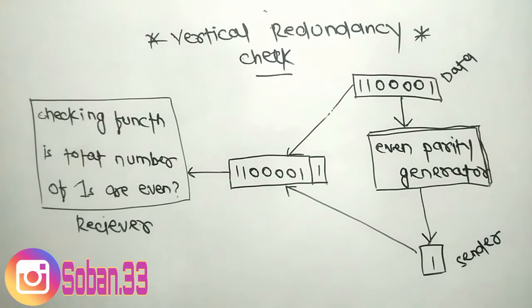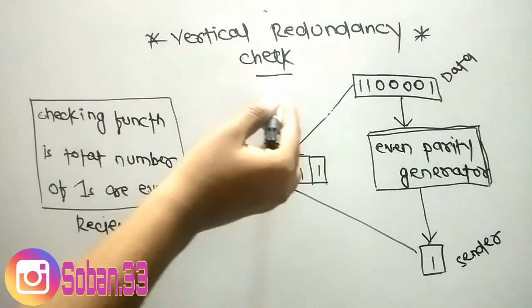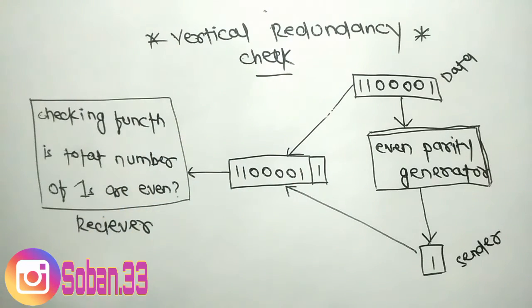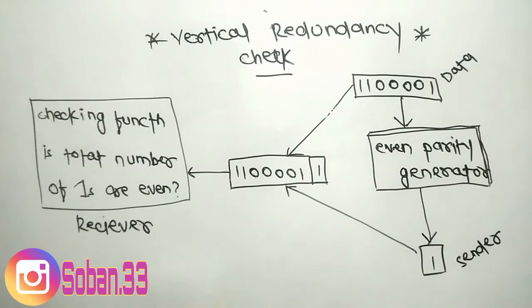The topic we are going to study in this video is vertical redundancy check. The most common and least expensive mechanism for error detection is the vertical redundancy check.